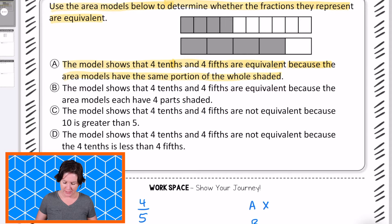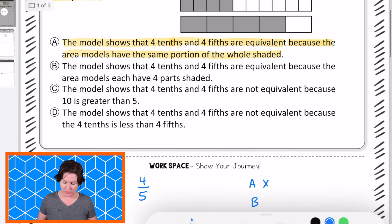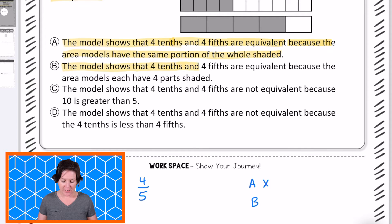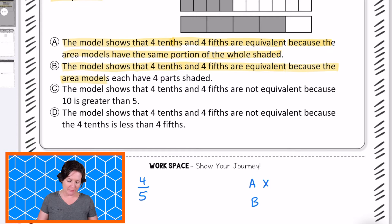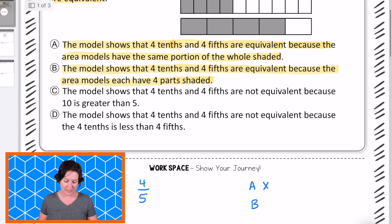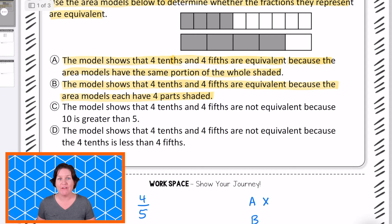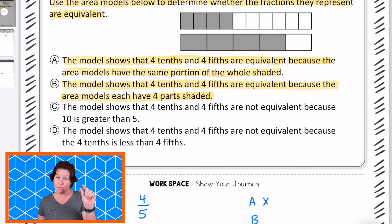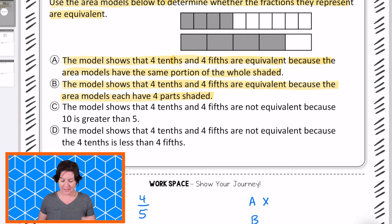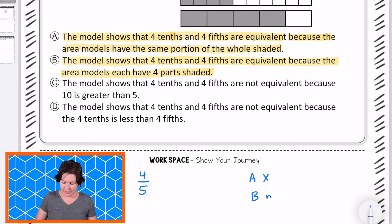All right, let's take a look at B. Notice how I'm showing my journey down here on paper. Answer B says the model shows that 4 tenths and 4 fifths are equivalent because the area models have four parts shaded. Yes, they both have four parts shaded, but the top fraction is broken into smaller pieces. So four of those pieces — those 4 tenths — is way less than 4 fifths. So we can put not equal. No, it's not B.